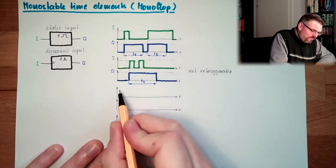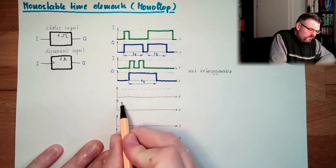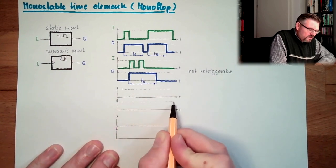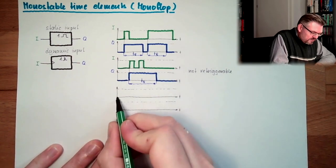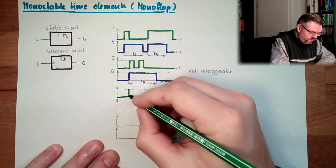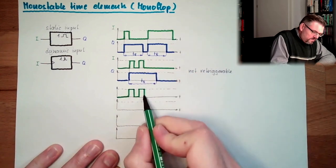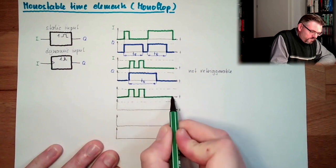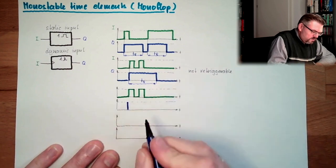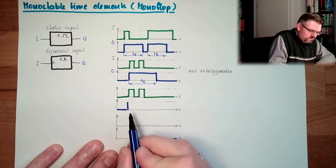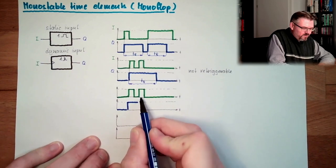And then there are elements out there which are retriggerable. I will show you the same. With the same, I will try to do it exactly the same way. So here, first impulse, second impulse. And here we are changing to one. Here is no difference. And here the second trigger will appear.